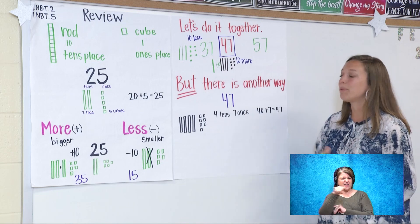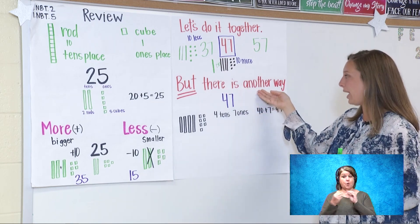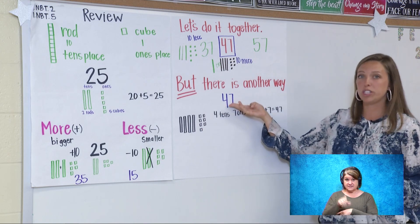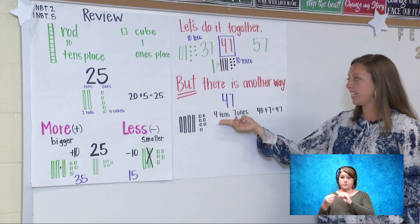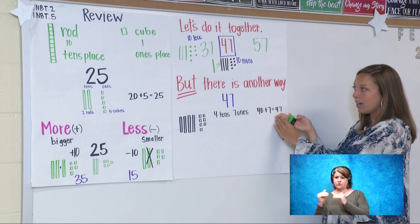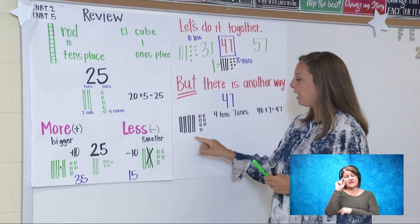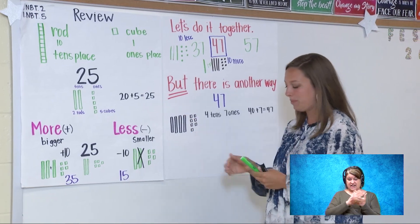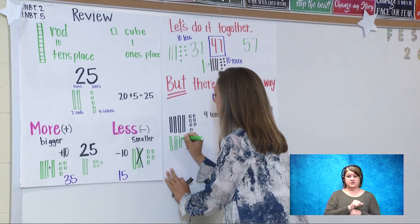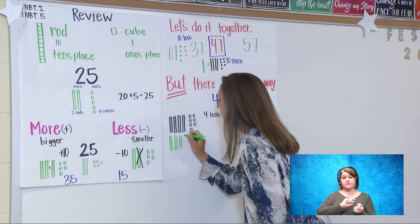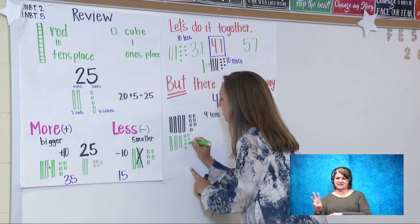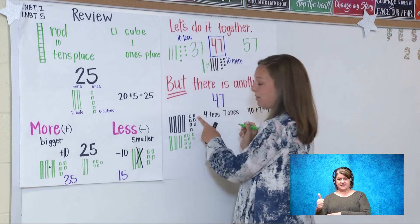I bet y'all got those right. But there's more — we can see it another way. My number is 47. I drew out four rods and seven cubes. The two-digit number 47 is represented by four tens and seven ones. So 40 plus 7 equals 47. What if I change this one rod into cubes? Because there's 10 cubes in one rod. So I'm going to bring down my other three rods and turn this rod into 10 cubes: 1, 2, 3, 4, 5, 6, 7, 8, 9, 10. And then my seven ones: 1, 2, 3, 4, 5, 6, 7.